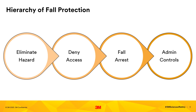Number two, you should try to deny access — solutions that keep individuals from accessing the hazard. Examples are guardrail systems, which are barriers installed to prevent personnel from falling to lower levels. Where suitable, they protect the greater number of employees with little or no training needed. Thirdly, fall arrest — this is the last resort, requiring the greatest amount of training and responsibility. The worker must wear equipment that allows for a connection between the worker's harness and an anchor point designed to stop a fall and minimize injury after it has begun.